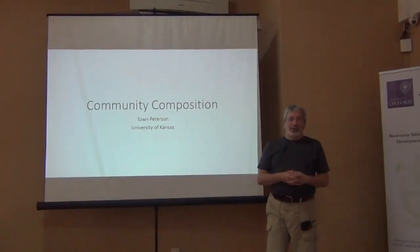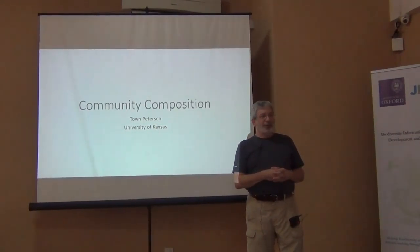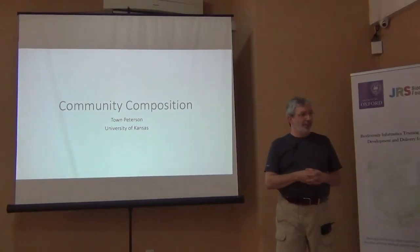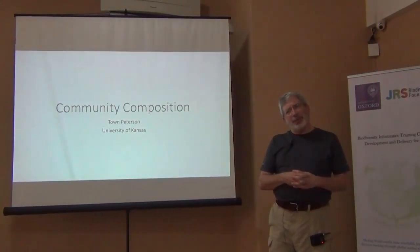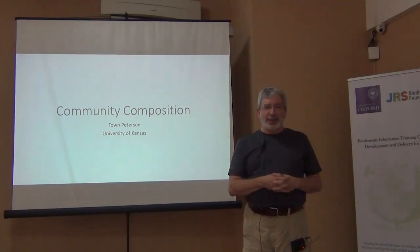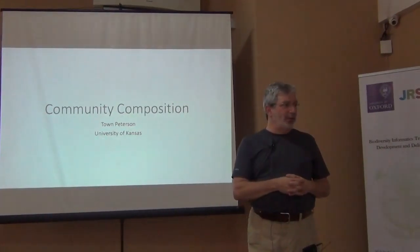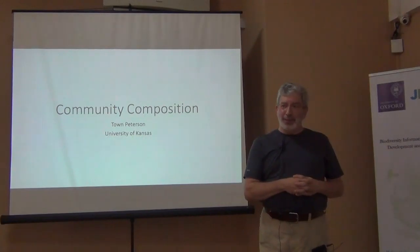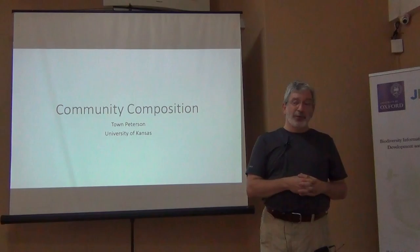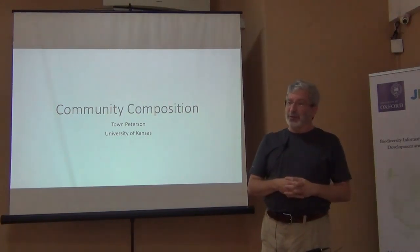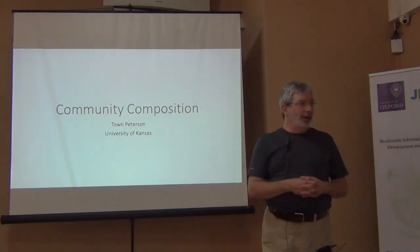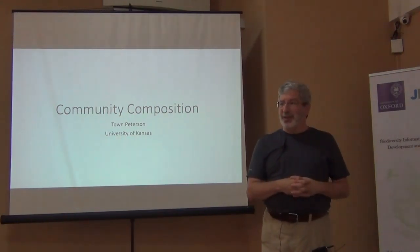Number three on our list of essential biodiversity variables is community composition. I want you to remember that this is in some senses not at all independent of the species populations EBV. Because species populations EBV had a version that was numbers of individuals, and it had a version of probability of occurrence of the species — yes versus no.